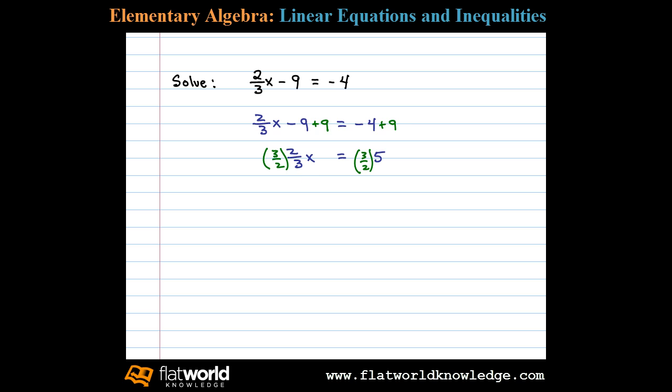When you multiply reciprocals we know the product is 1, so that leaves us with 1x equals three-halves times 5, which is 15 halves. 15 halves is our solution.